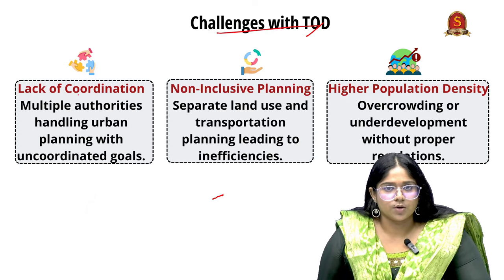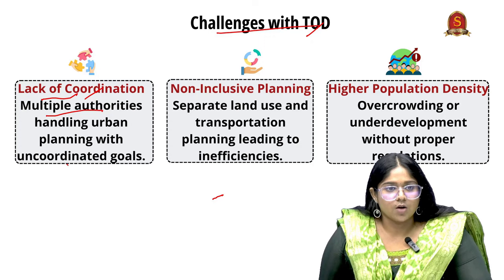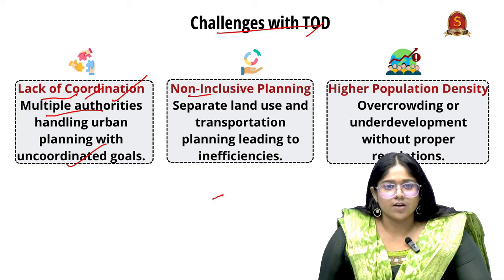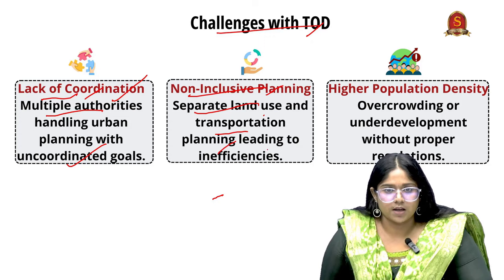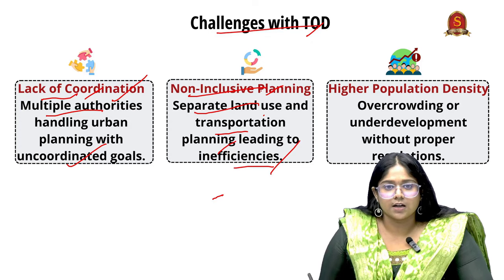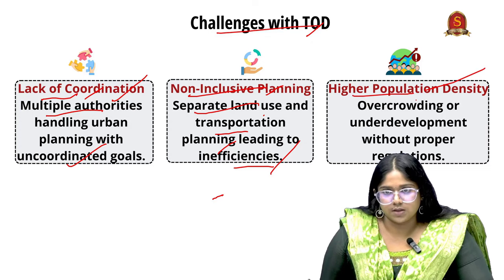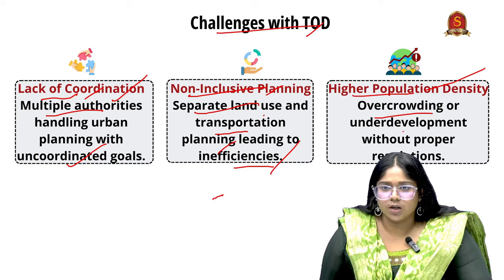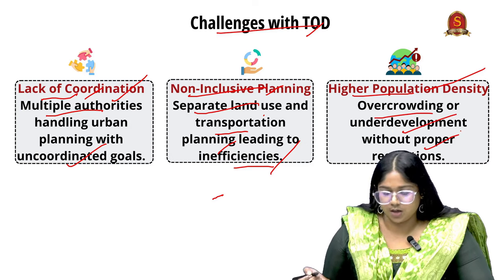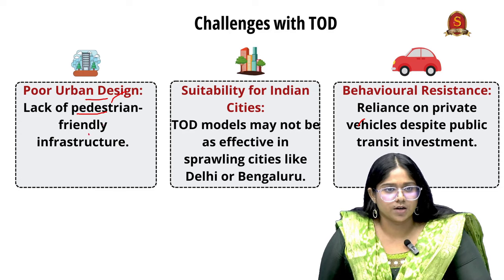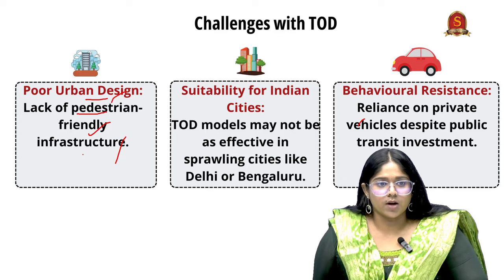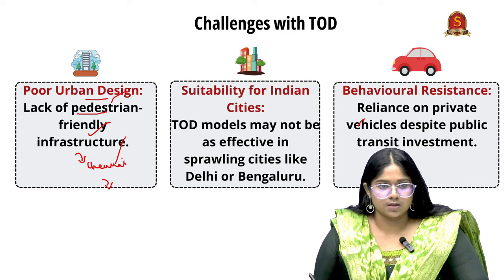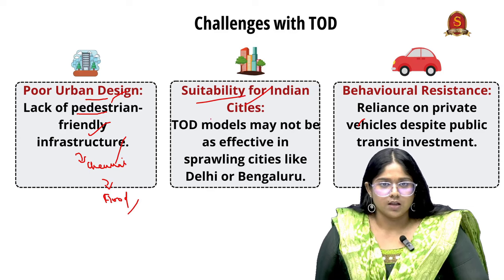After looking at the advantages, we must equally look at the challenges of TOD. First is lack of coordination — multiple authorities handling urban planning with uncoordinated goals can be a hindrance, as seen in Indian metropolitan cities. Next is non-inclusive planning — having a separate plan for land use and a separate plan for transportation leads to inefficiencies, so we need an integrated planning program. Next is higher population density — overcrowding or underdevelopment without proper regulations. Next is poor urban design — lack of pedestrian-friendly infrastructure, as seen with Chennai's flood impact.